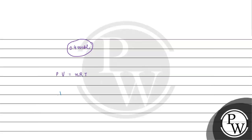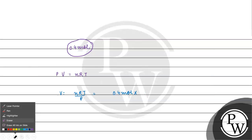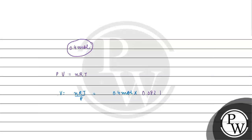Using the ideal gas equation PV = NRT, V = NRT/P. N is 0.4 moles, R is 0.082 litre·atm per kelvin per mole, temperature is 273 Kelvin, pressure is 1 atm. So V = 0.082 × 0.4 × 273 = 8.96 litres.